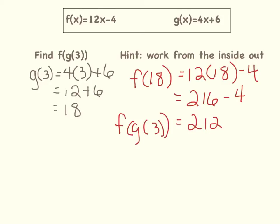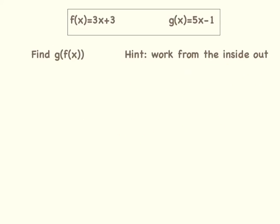Next, we are going to look at another type of composite function. Now we are going to find g(f(x)). In our previous example, they gave us the number 3. This time we are finding g(f(x)), and what that means is we are going to take the f(x) equation and substitute it for the x variable in the g(x) equation.